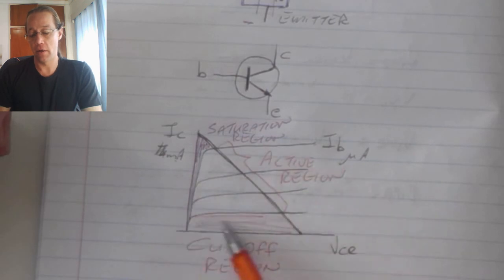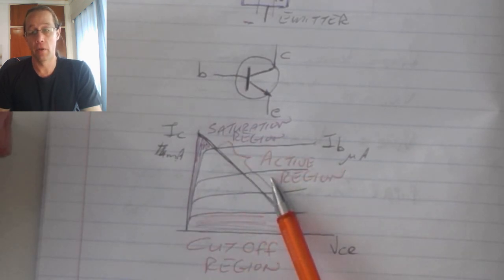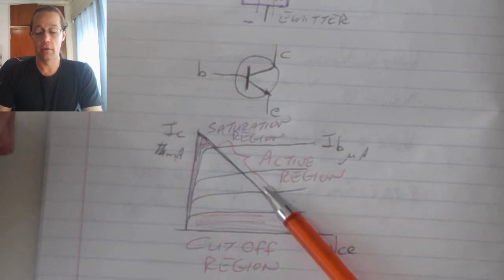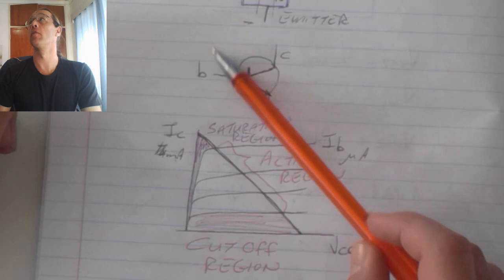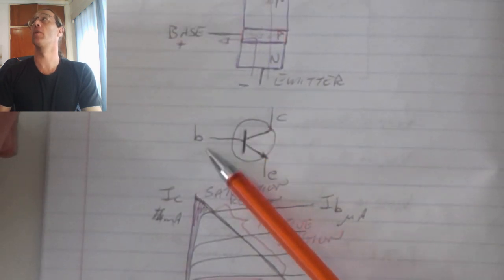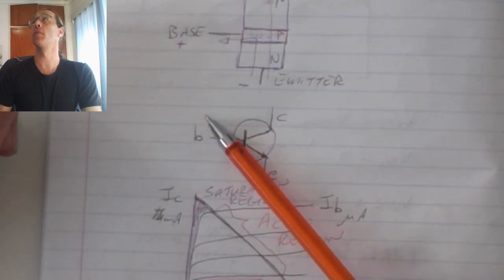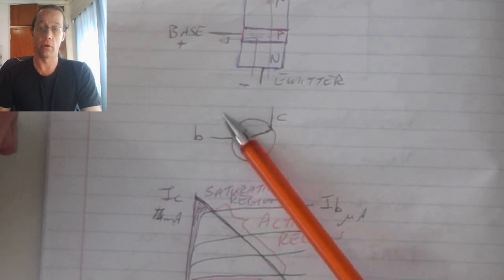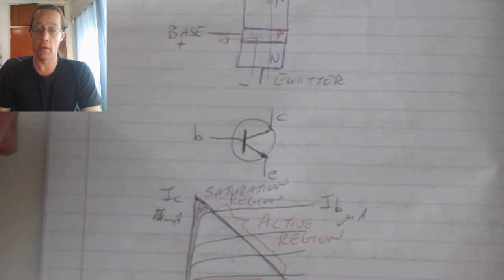When using the transistor in the active region, where it operates as an amplifier, we usually connect a preset voltage across the base and the supply and the base and the emitter, in order for controlled voltage output to be generated.